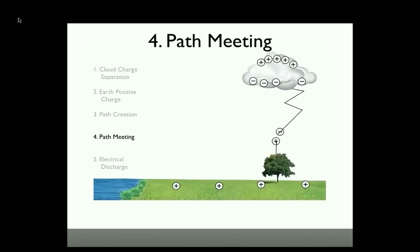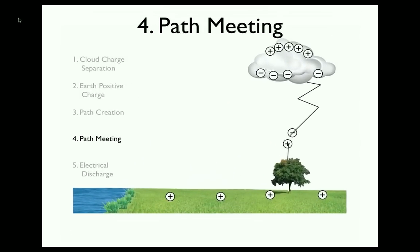The fourth stage occurs after the negatively charged step leader and the positively charged streamer meet. The two paths have completed their journey. With this path complete, current will be able to flow between the Earth and the cloud.